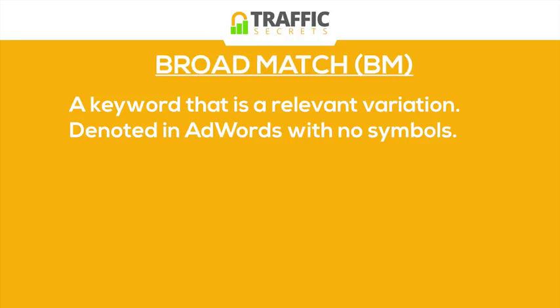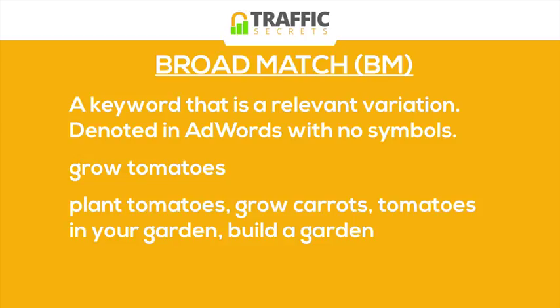For broad match, it's a keyword that is a relevant variation, and it's denoted in AdWords with no symbols at all — you would just type 'grow tomatoes' into the keyword list. But the ad could be triggered for: plant tomatoes, grow carrots, tomatoes in your garden, build a garden. AdWords will take a broad match and try to find synonyms, similar related words, misspellings and typos, and all kinds of variations that it thinks are relevant to the keyword phrase.